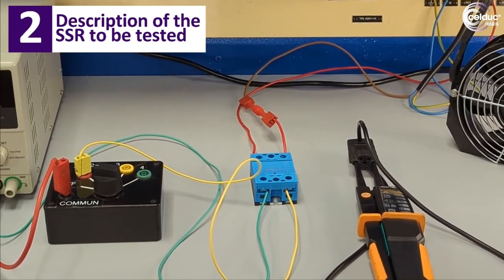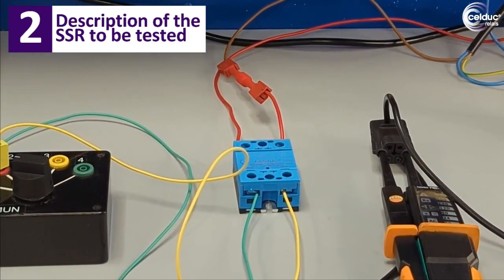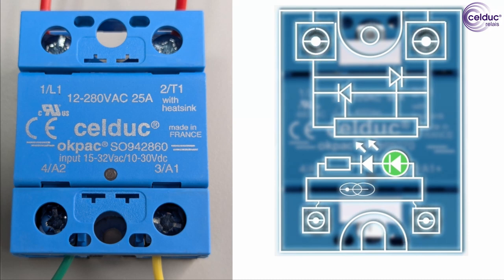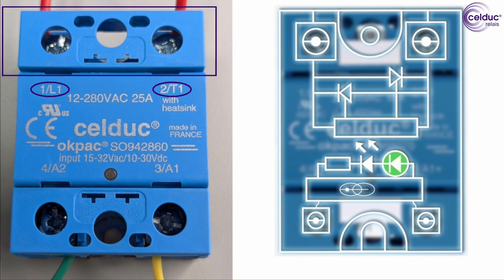The test is performed with a solid-state relay from the OKPAC series. First let's identify the input and output terminals of the SSR. The input terminals are typically labeled control or input, while the output terminals are labeled with the operating output current and voltage.